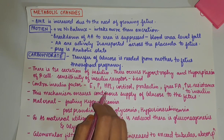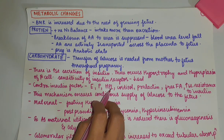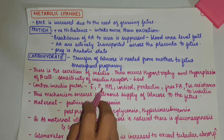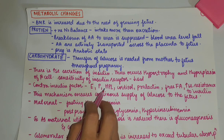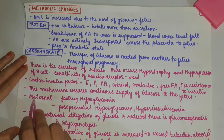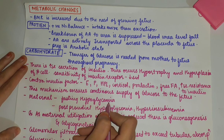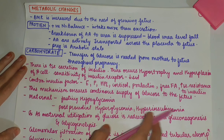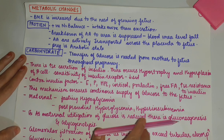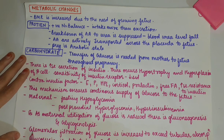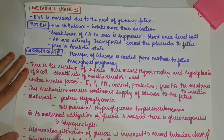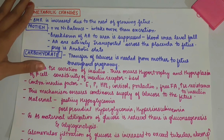Insulin allows the utilization of glucose. In pregnancy, there is resistance to insulin and contra-insulin factors are present, so glucose is not utilized by the mother. As a result, there is increased concentration of glucose in the blood and easy transfer of glucose to the fetus. There occurs fasting hypoglycemia, postprandial hyperglycemia, and hyperinsulinemia. As maternal utilization of glucose is reduced, there is gluconeogenesis and glycogenolysis. Increased glucose concentration leads to increased glomerular filtration of glucose exceeding tubular absorption, and glycosuria is detected in 50% of pregnant women.